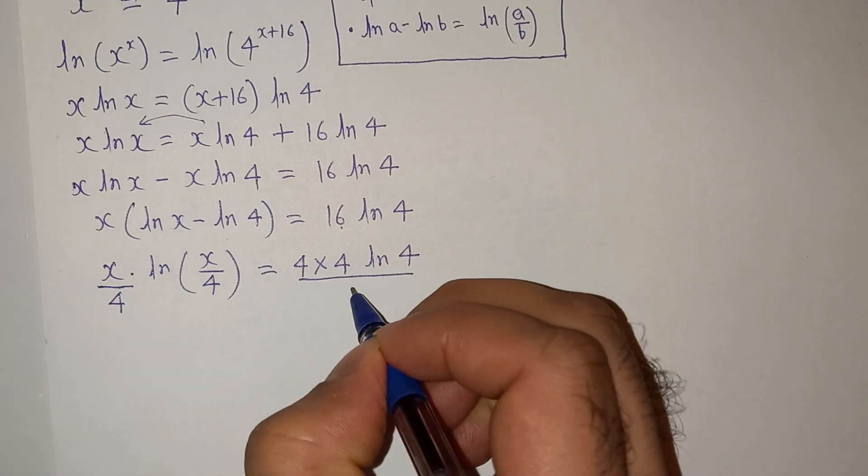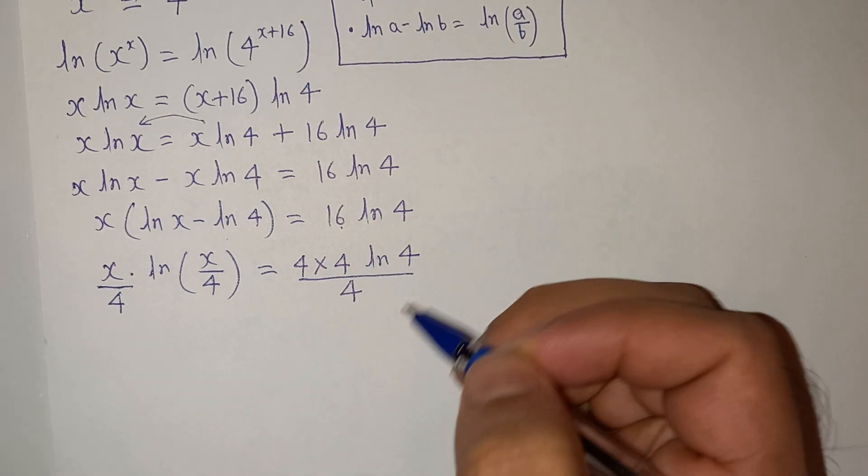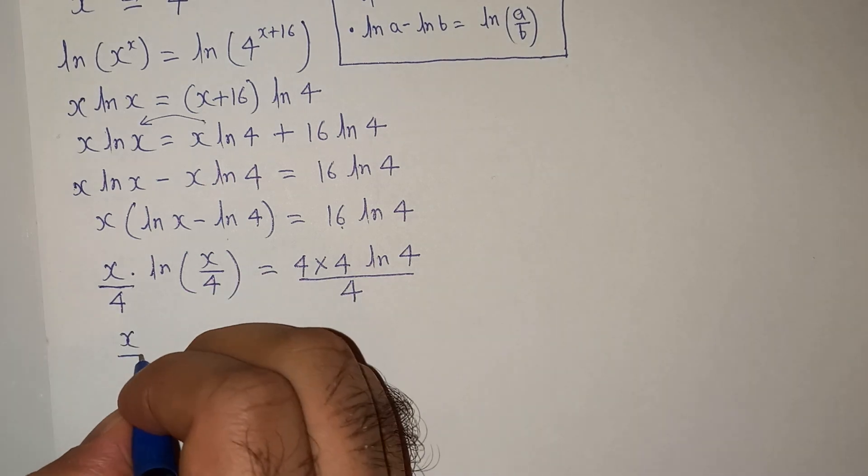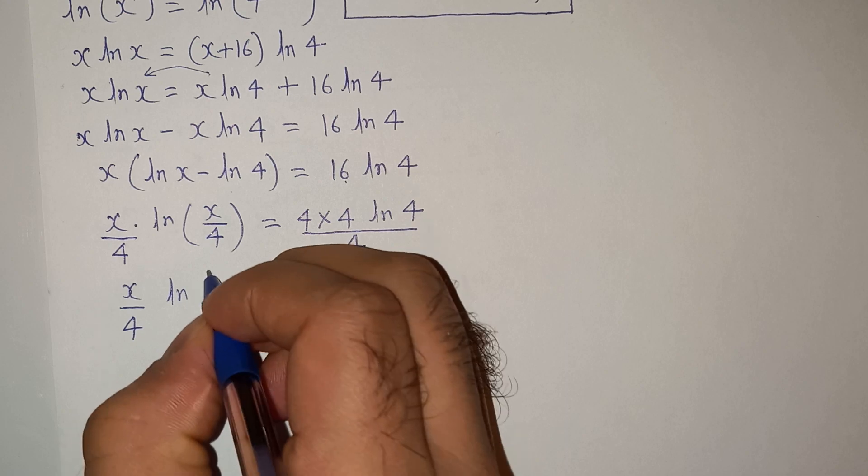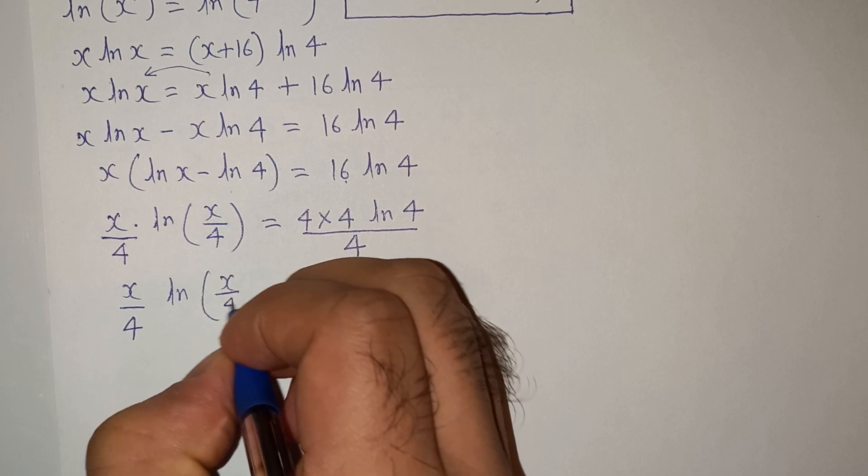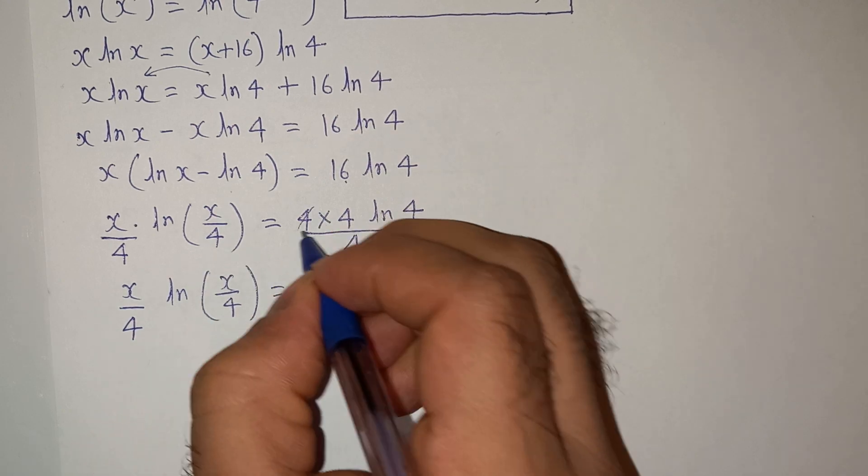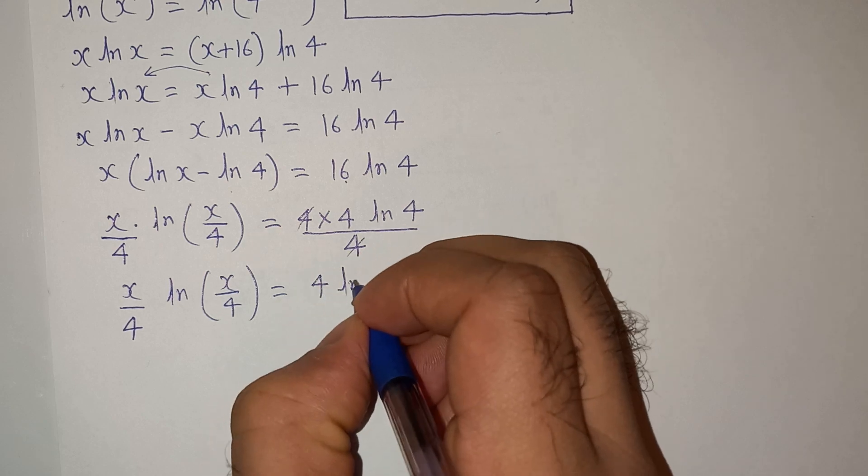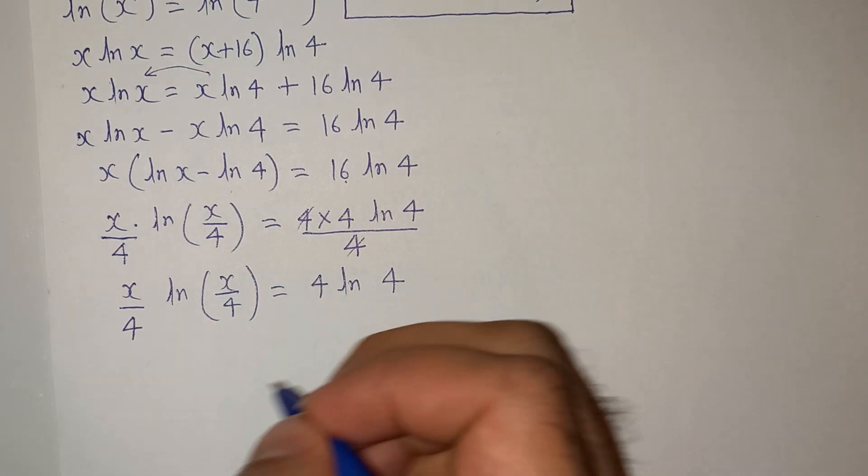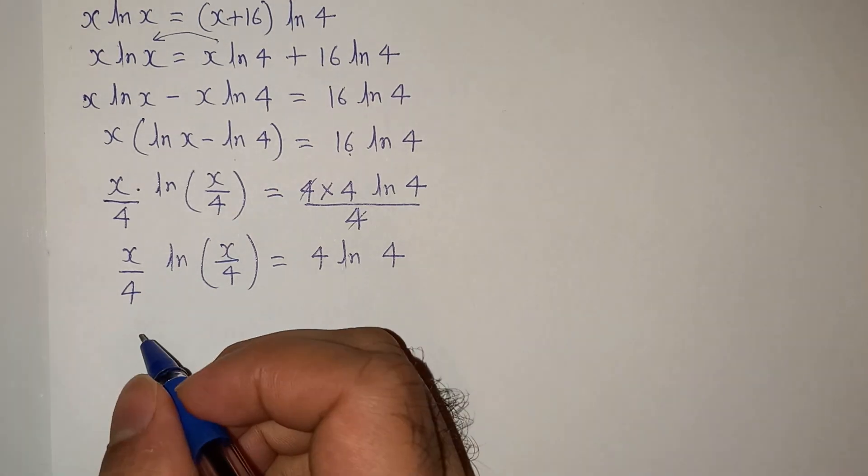So we can write this as x by 4 log x by 4 equals to, and let's divide the right hand side by 4 as well, so this will be x by 4 log x by 4 equals to